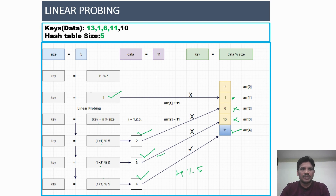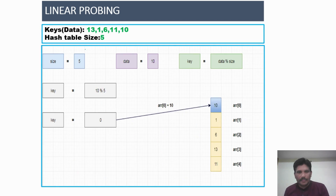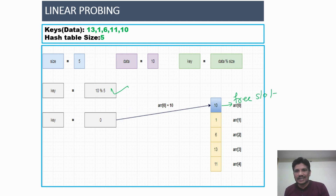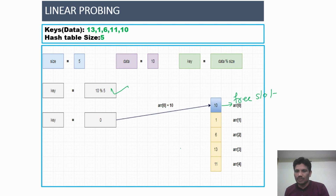The remaining key value is 10. 10 modulus 5 = remainder 0. At index location 0, we got a free slot, so we store data 10 at index location 0. Now all elements — 13, 1, 6, 11, and 10 — have been placed in the Hash table. If you try to insert another element, it is not possible because all slots at indices 0 to 4 are filled. We would need to increase the size of the Hash table.